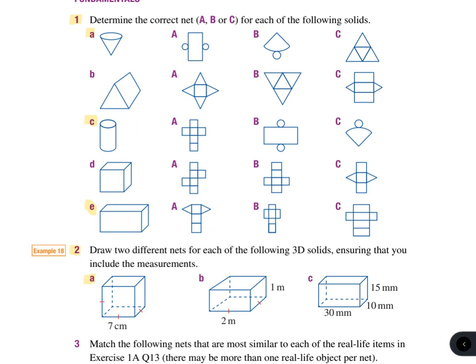1A, determine the correct net. So it's got a cone, it's got one flat face. Let me just highlight my pen. One flat face and then a wraparound part. So it's going to be this one, B, because there's my one flat face and there's my wraparound part.